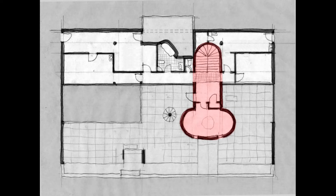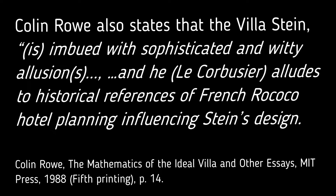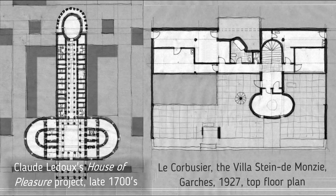Here Rowe is succumbing to expressing, albeit in a fairly veiled way, what he suspects to be a secret and personal composition by Le Corbusier. I believe he is quite correct that a phallus shape on the rooftop of the Villa Stein was intentional. Colin Rowe also states that the Villa Stein is 'imbued with sophisticated and witty allusions,' and that Le Corbusier alludes to historical references of French rococo hotel planning. Is Rowe suggesting that Le Corbusier included a phallus on the rooftop of the Villa Stein as a witticism — in essence, a quotation of the infamous Ledoux brothel design?